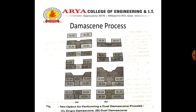Damascene processes are of two types: single damascene and dual damascene, as shown in the figure. In single damascene, the ILD is first etched down to the previous metal layer, the wire recess is filled, and the excess is removed by CMP. Next, the interconnect recess is patterned and etched, and a second copper fill and CMP are done.